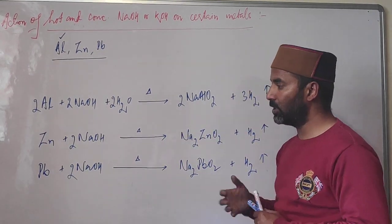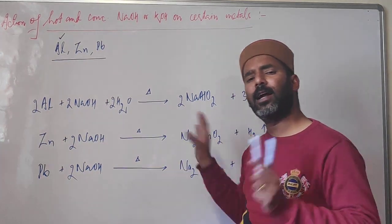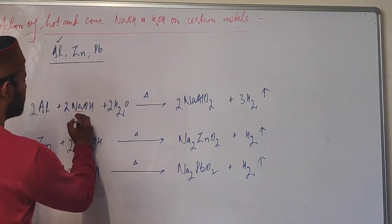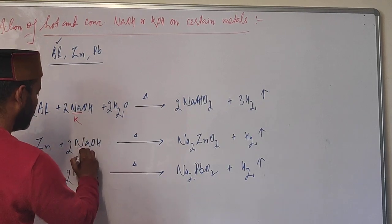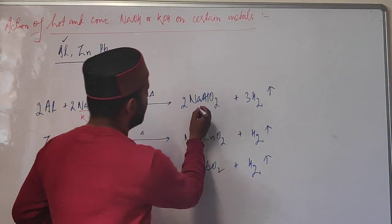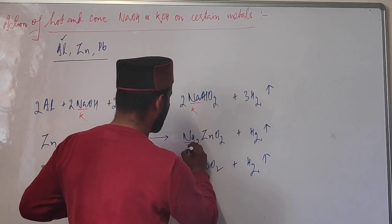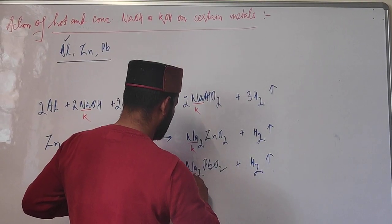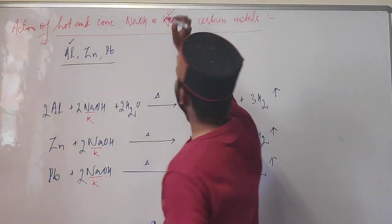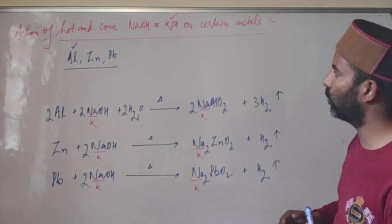Potassium hydroxide reacts similarly with these metals. The only difference is that potassium replaces sodium in the product salts — so instead of sodium meta-aluminate, sodium zincate, and sodium plumbite, we get the corresponding potassium salts. All other observations are similar.